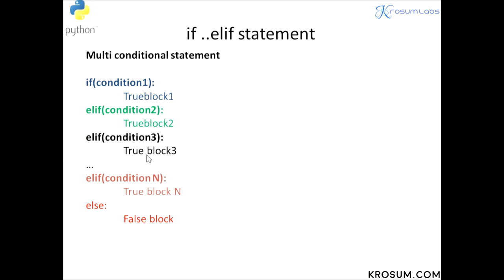Even if a condition is true or false, Python won't test the remaining conditions. If the first condition fails, then it moves to the second condition. If second condition is true, the true block executes and exits. If second condition also fails, it moves to the third condition, and so on. We can write n number of conditions.